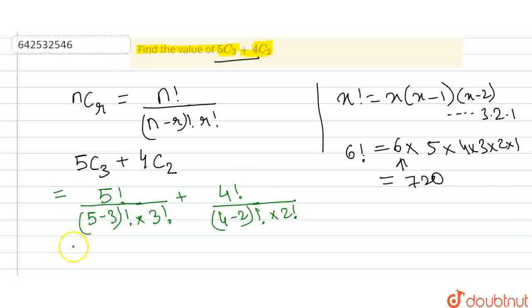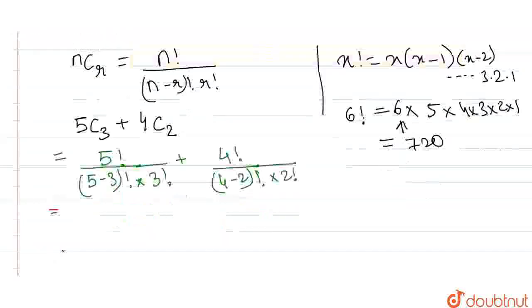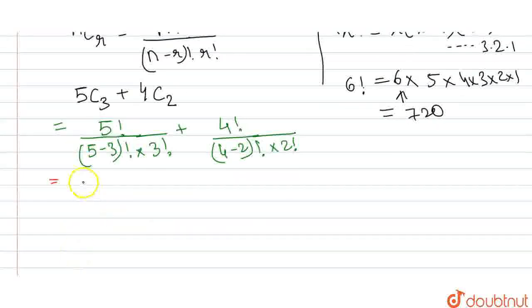And this is equal to 5 factorial by 2 factorial into 3 factorial. 5 minus 3 is 2 factorial. Plus 4 factorial divided by 2 factorial into 2 factorial.